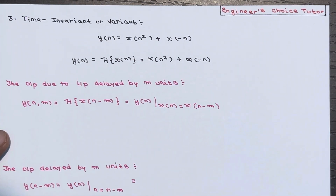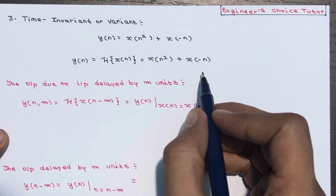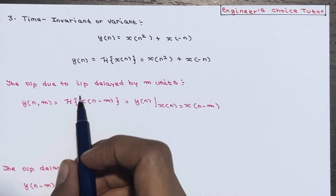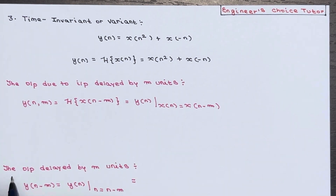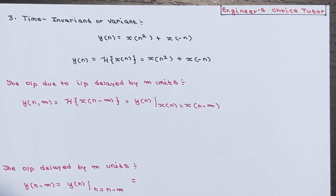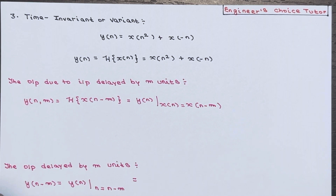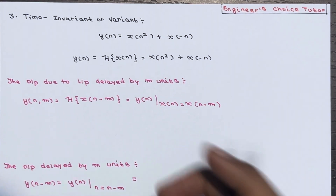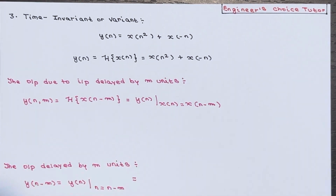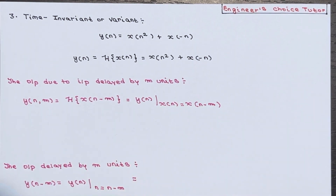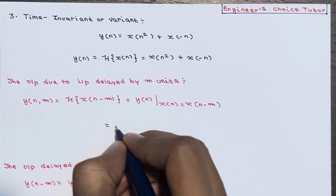Now let's check whether the system is time invariant or time variant. We calculate two things: the output due to input delayed by m units, and the output delayed by m units. If these two are equal, the system is time invariant; if not, it is time variant. So let's calculate y of n comma m, which is y of n when x of n is replaced by x of n minus m.